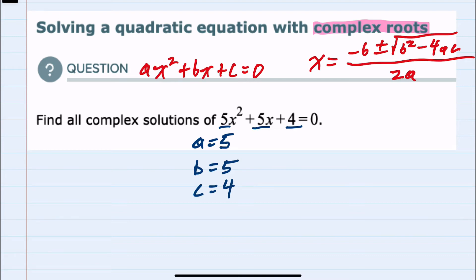we can substitute in to the quadratic formula where we know x will be negative b, so negative 5, plus or minus the square root of b squared, and since b is 5, b squared is 25, minus 4 times a, which is 5, times c, which is 4, over 2 times a, or 2 times 5.